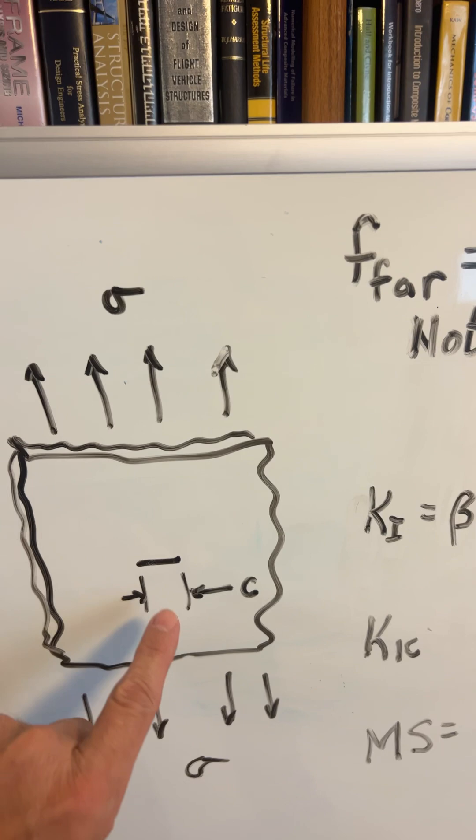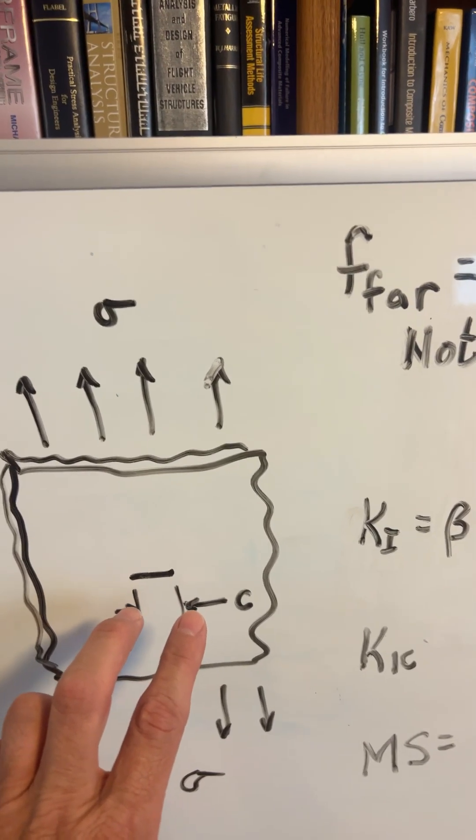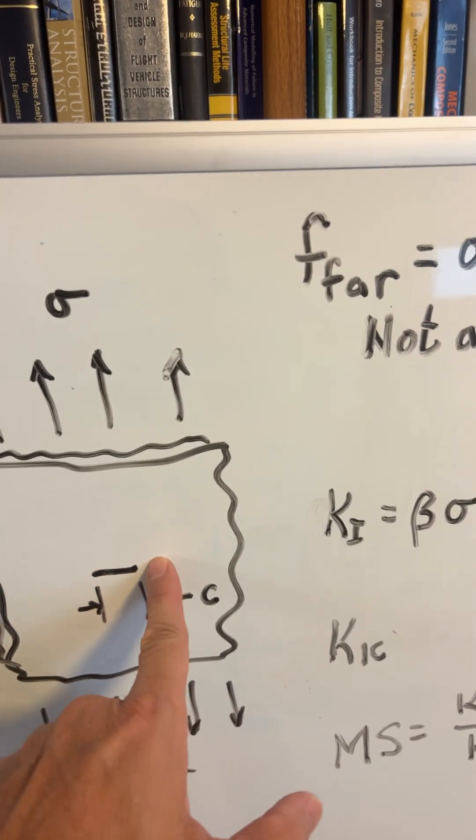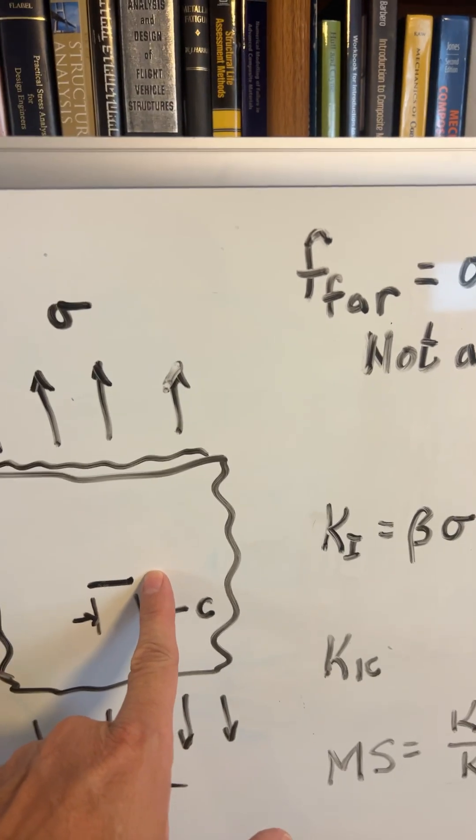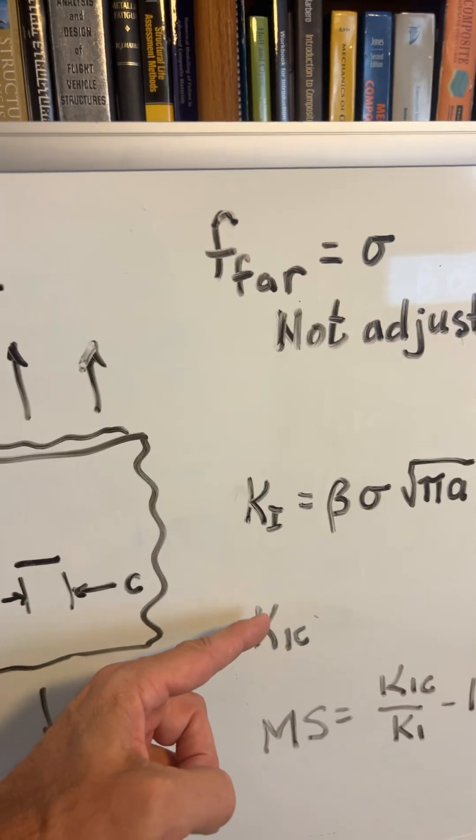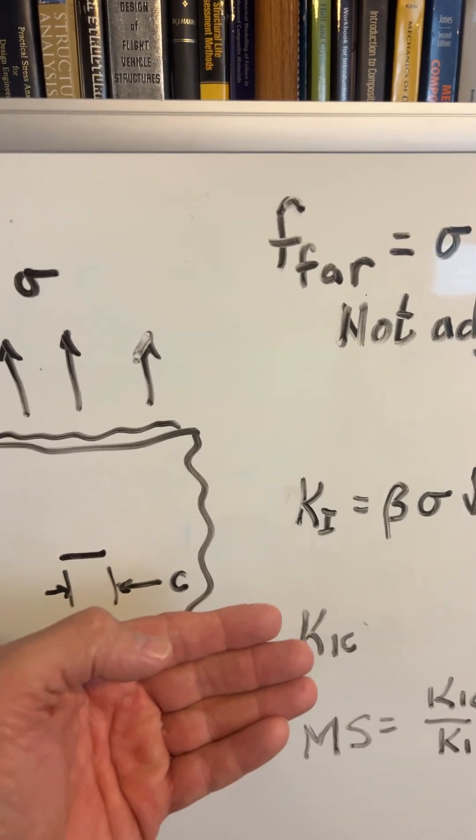If we find a crack in that, let's say that crack is length C, we want to evaluate fast fracture. So what we're going to need to do is calculate the stress intensity right there at the edge called K1 for an opening crack. And we check that against a material constant called K1c. It's called the toughness of the material.